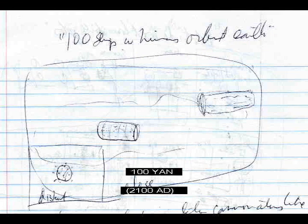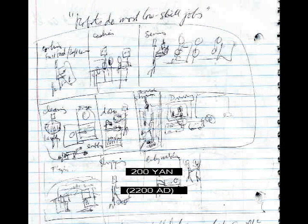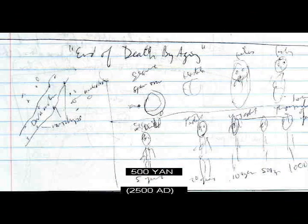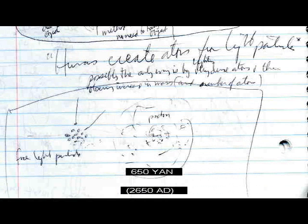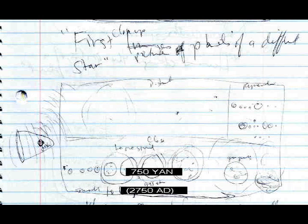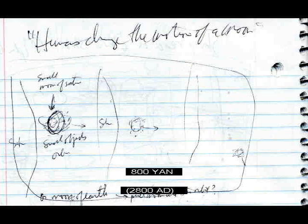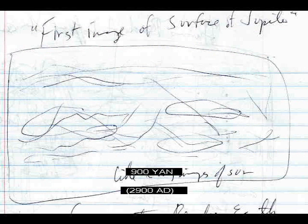Helicopter cars form a second line of traffic above the streets. 100 ships with humans orbit Earth. Large-scale transmutation: common atoms like iron converted into hydrogen and oxygen using particle colliders. Robots do most low-skill jobs. 1,000 human-filled ships orbit Earth. Humans live on Mars. End of death by aging. Humans live on Venus. Humans move asteroid. Humans create atoms from light particles. Ship reaches other star: Alpha Centauri. First close-up pictures of planets of a different star. Ship impacts Jupiter's surface. First image of surface of Jupiter.